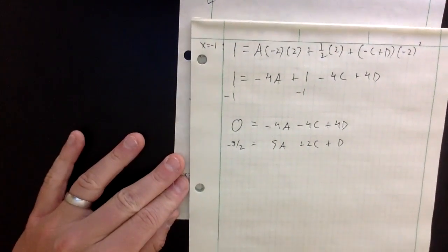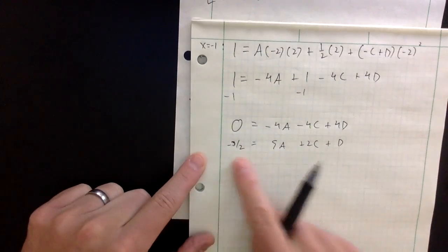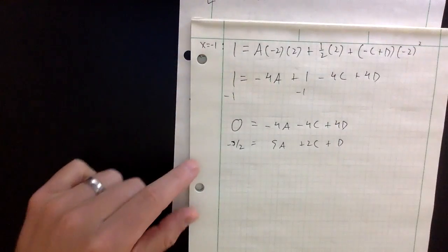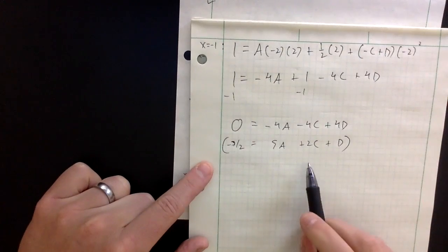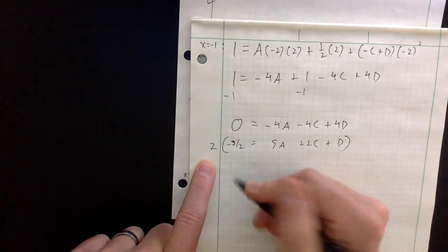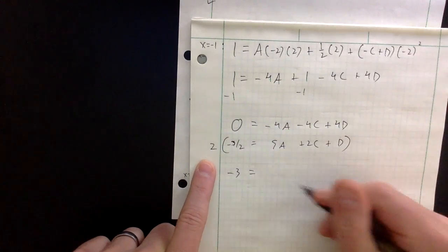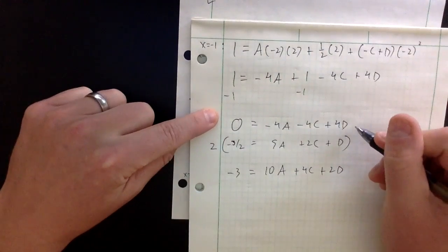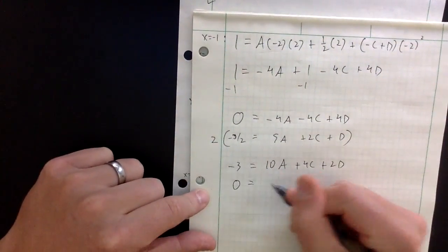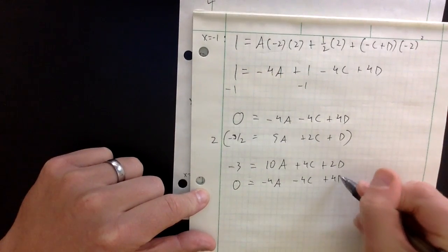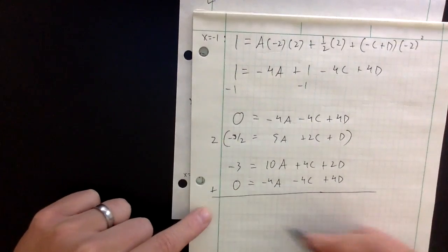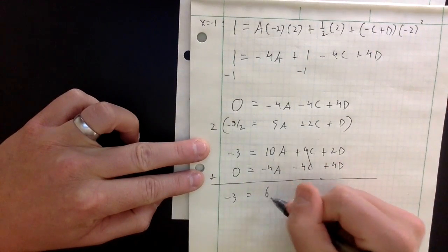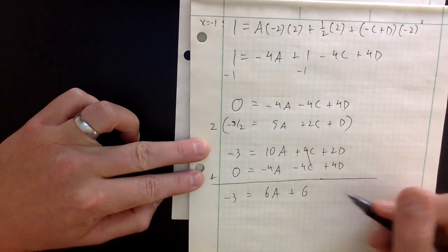Now I want to eliminate C using equations two and three. I multiply equation two by 2 to get minus 3 equals 10A plus 4C plus 2D. Adding that to equation three (0 equals minus 4A minus 4C plus 4D), the C terms cancel and I get minus 3 equals 6A plus 6D.